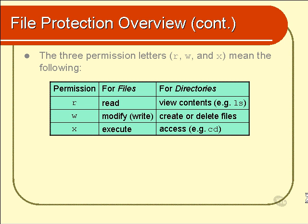The W permission means that you can modify or write the file. We haven't looked at any commands yet that will modify files, but a good example might be a text editor — you could open up a text file, make some modifications using the editor, and save those changes. But you would not be able to do that if you did not have write permission.